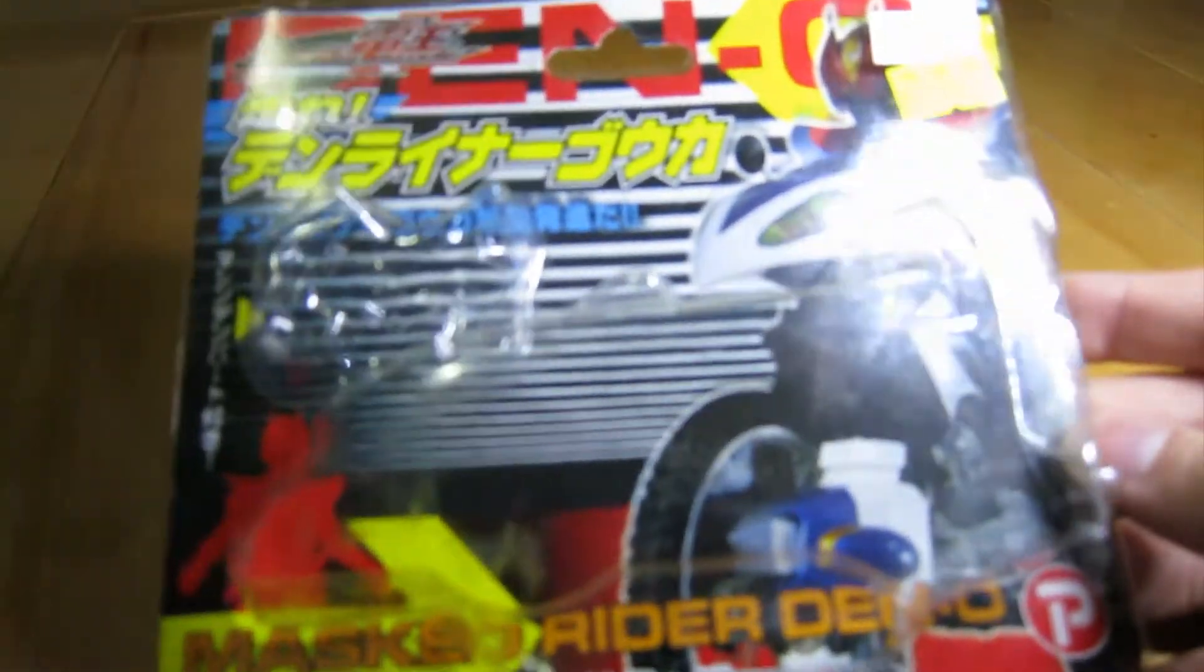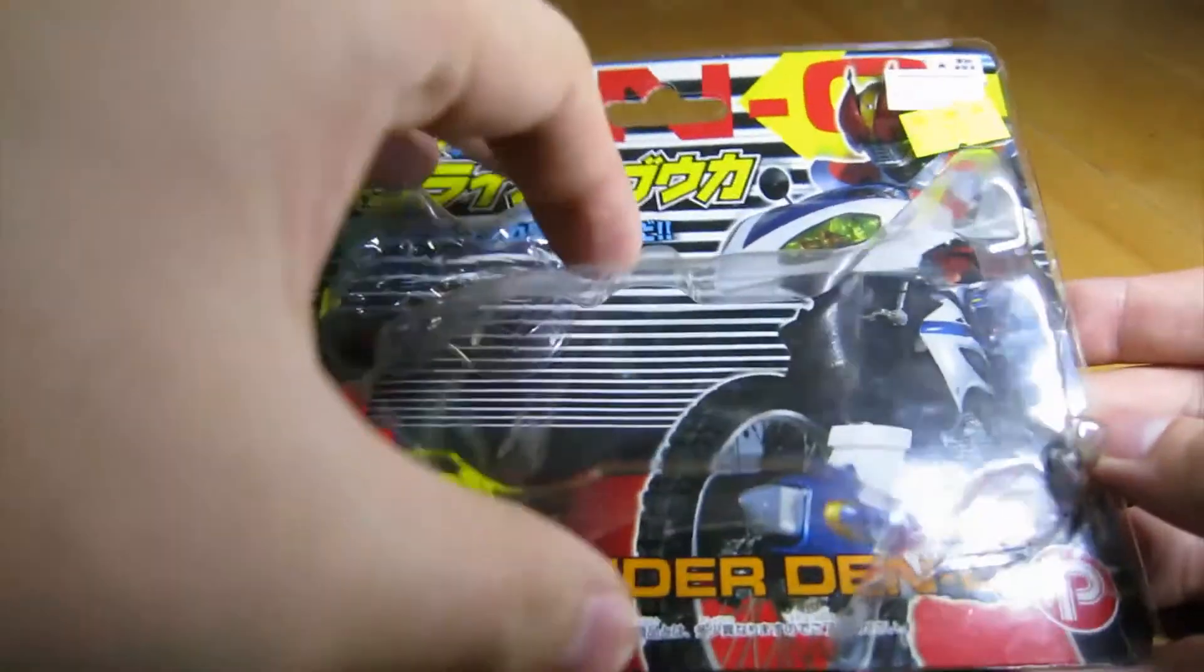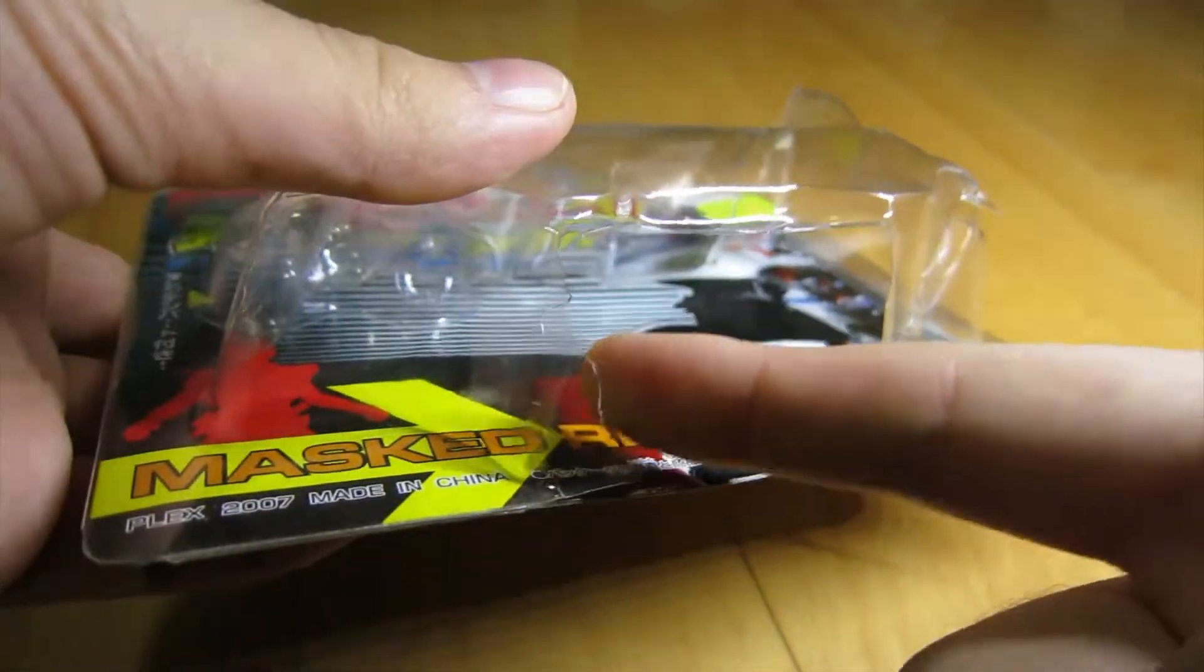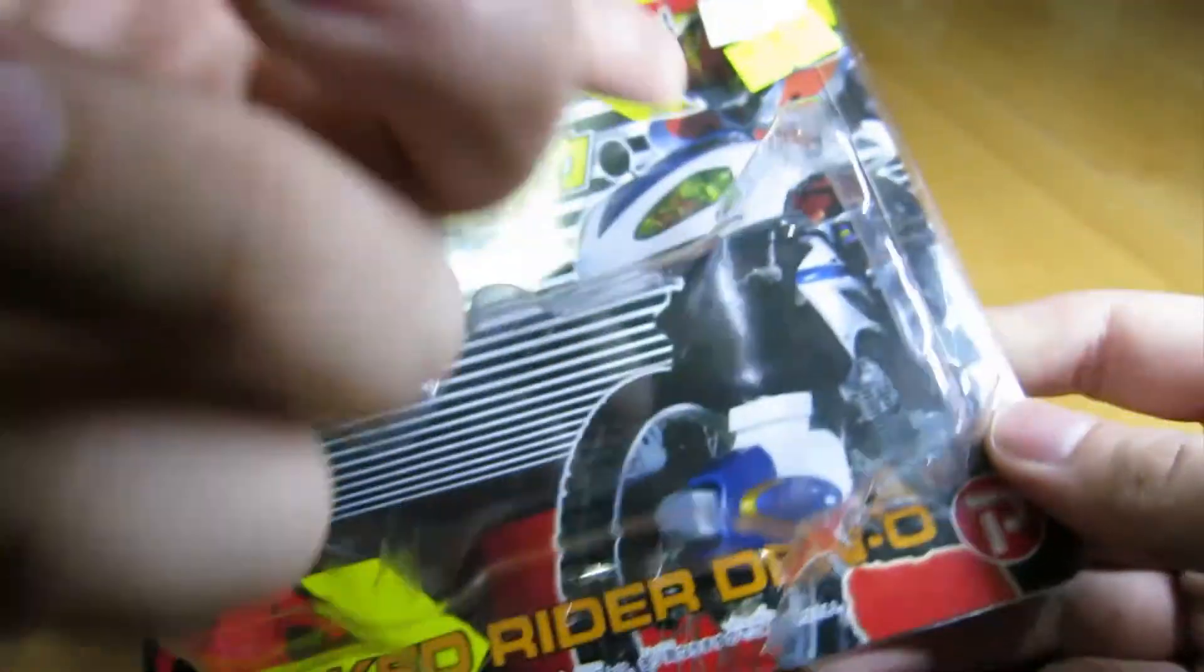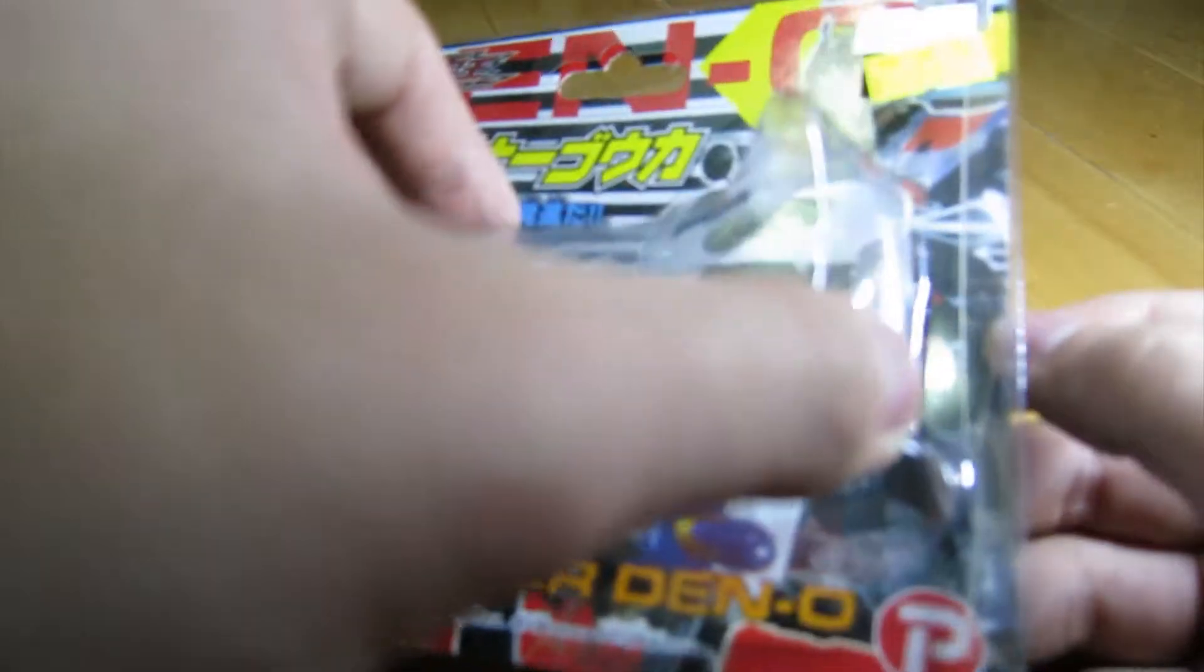So yeah this is Den-O, it's also yellow and red. This is like a really old thing. The package was actually broken but it didn't matter because it was super cheap and the thing inside was fine. I'm not collecting these in super perfect condition.